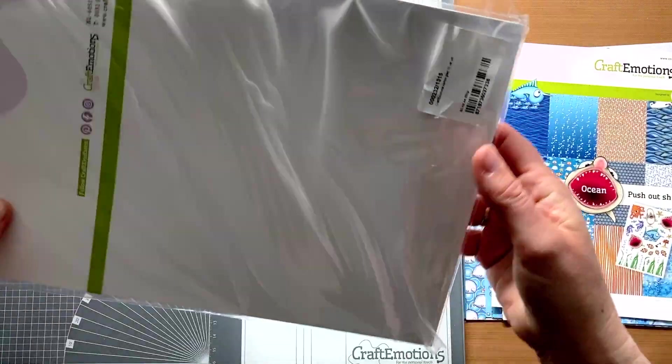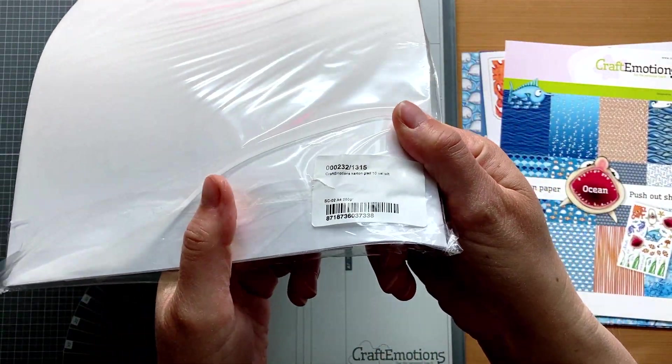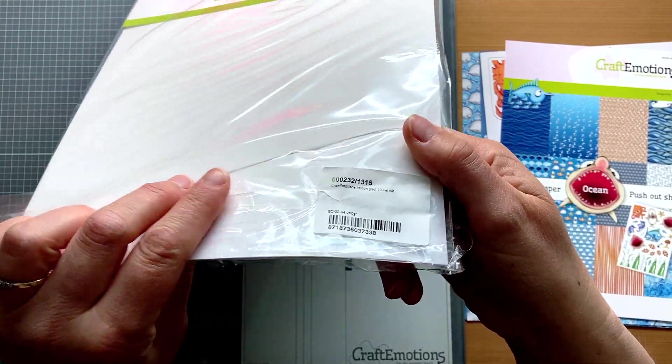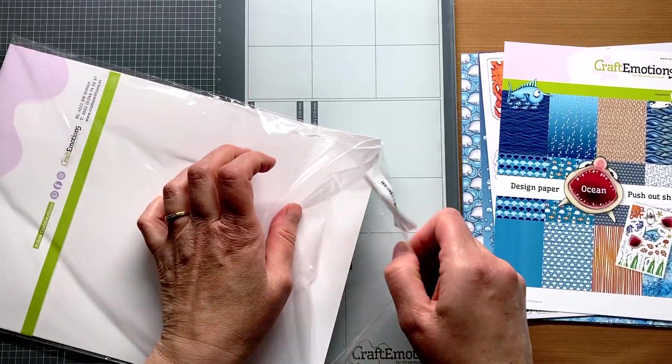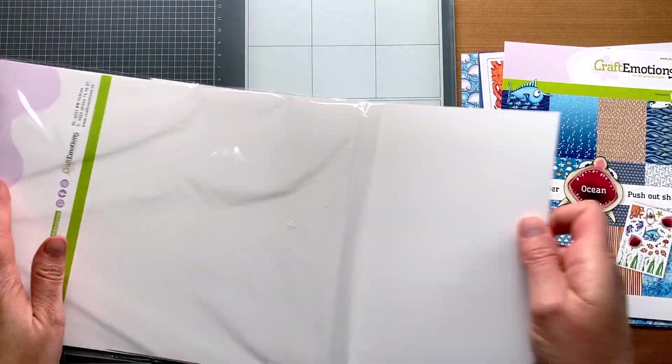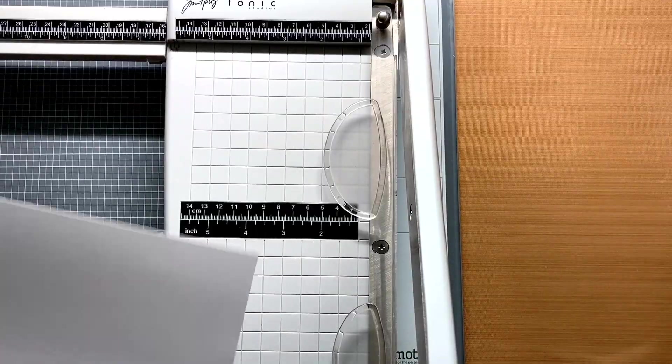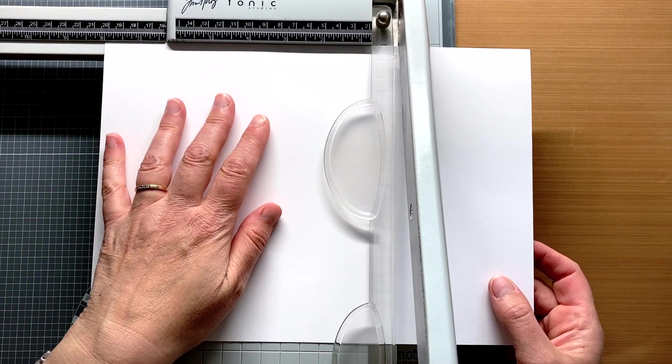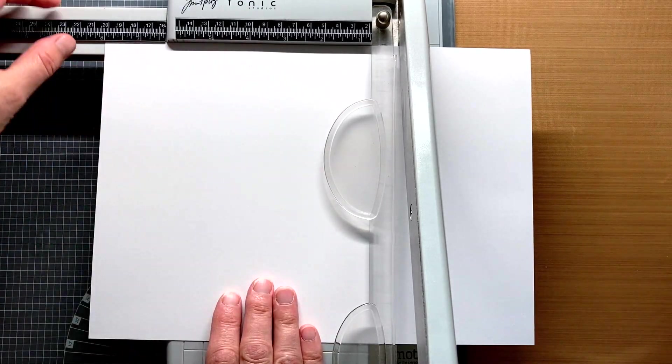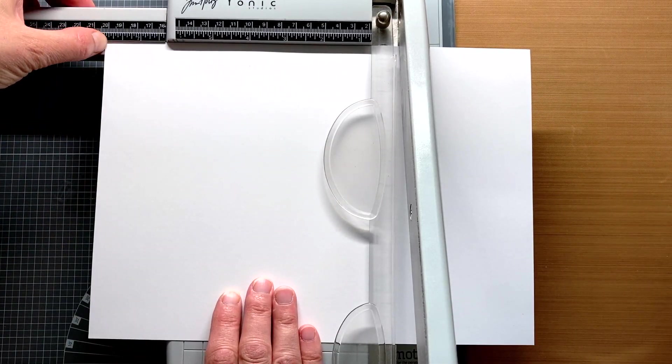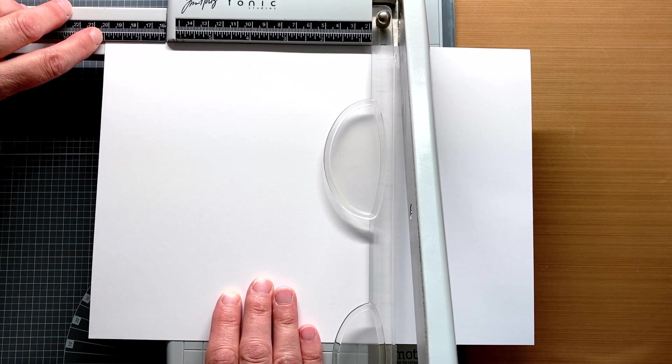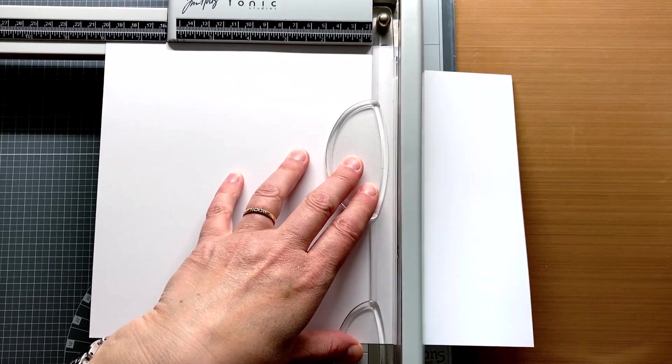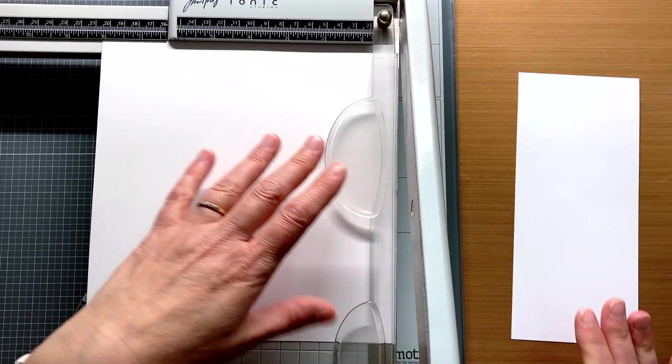For my card base I use this white cardstock from Craft Emotions. It's a 250 grams A4 paper. I think 200 grams paper would also do fine. I am going to cut this piece of paper to 8 inches. You could also take 20 centimeters, that's not a problem. But the reason I measure this in inches is because my scoring board measures in inches, and that's the guideline for me.